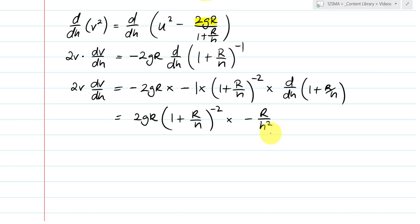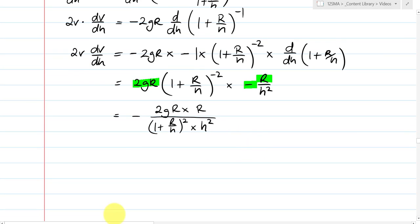And now we can simplify this. So I'm going to simplify this to be 2gr times r. And I'm going to put that negative in there as well. But I'll put it at the front here. Now I've got 1 plus r over h squared times by h squared. And now I'm going to try and bring all that together. Because I can do stuff with the top and the bottom. So on the top I get negative 2gr squared. And at the bottom I've got 2 squared things. So I can bring them together. It becomes h plus r squared.